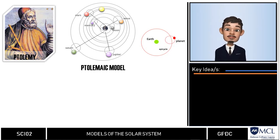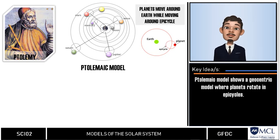In his model he mentioned about the planets moving around the earth while moving around the sphere called epicycle. This Ptolemaic model set firmly until the early part of the first millennium.